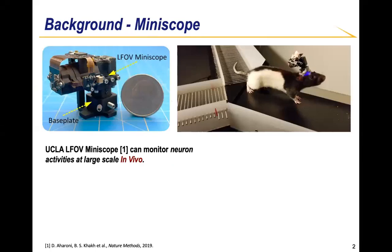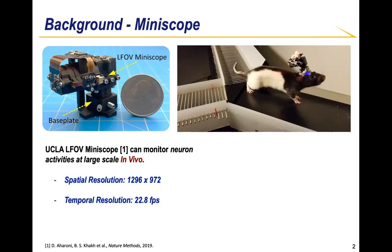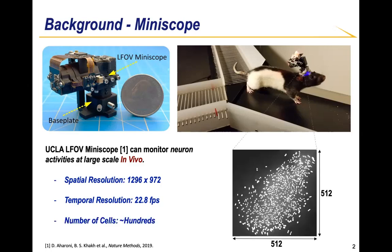Developed at UCLA, the Miniscope has become a popular device supporting real-time monitoring of cell activity from a certain brain region in vivo, which means recording calcium images while allowing the animal to behave freely in an open field. The spatial resolution of the state-of-the-art LFOV Miniscope can be quite large, about 1300 by 1000, and the temporal resolution is above 20 frames per second. Depending on the targeted brain region, the video session can record hundreds or even over a thousand cells.